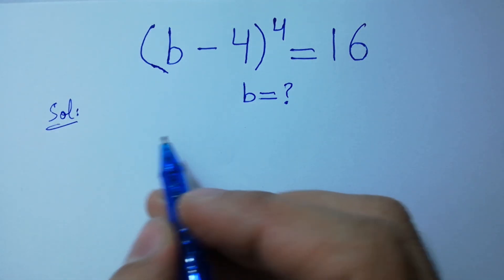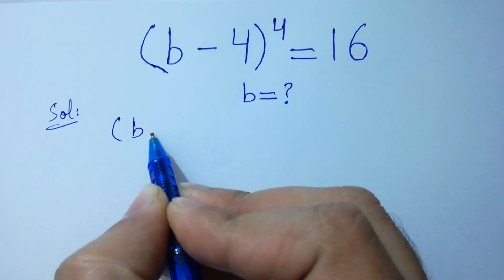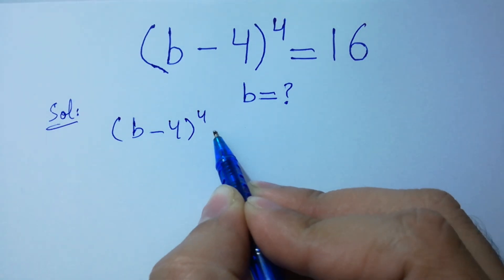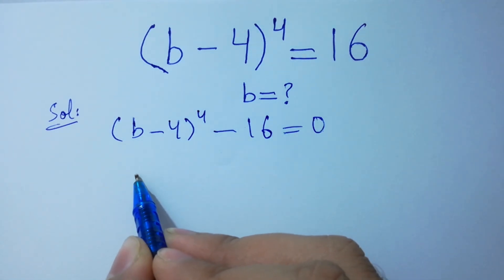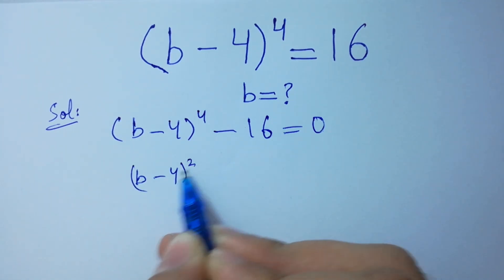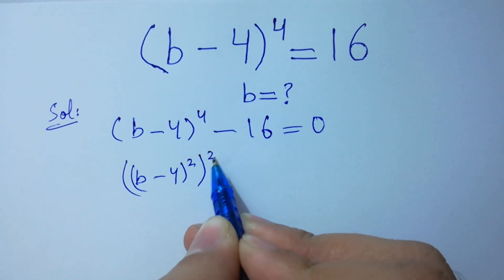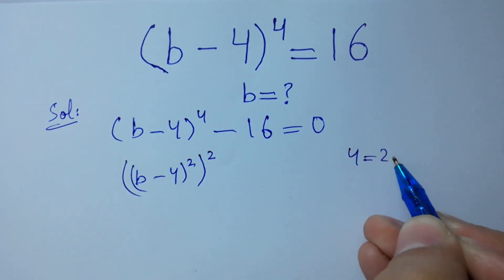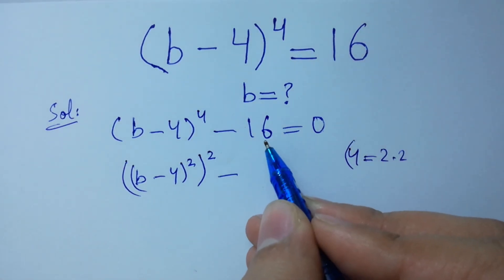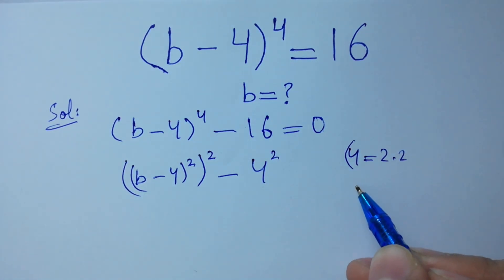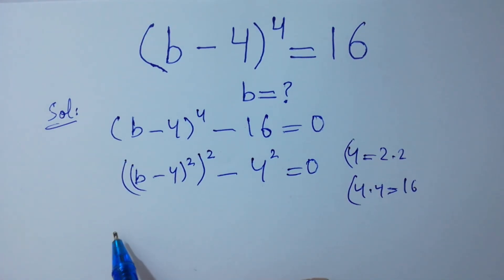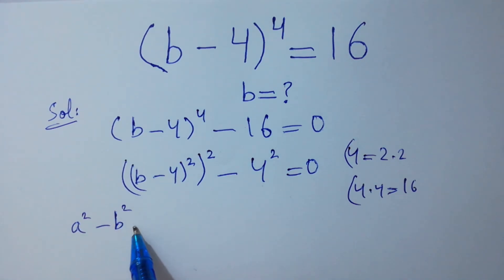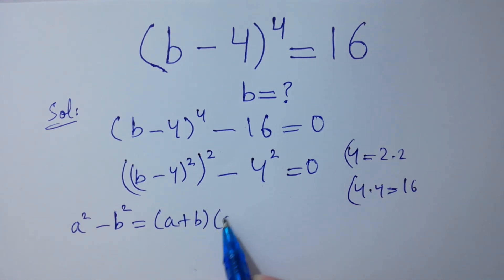This problem can be written as (b-4) to the whole power 4 minus 16 equals 0. This is the same as (b-4)² squared, since 4 equals 2 times 2, and minus 16 is 4² because 4 times 4 is 16, all equal to 0. This is just like the formula a² minus b², which equals (a+b)(a-b).